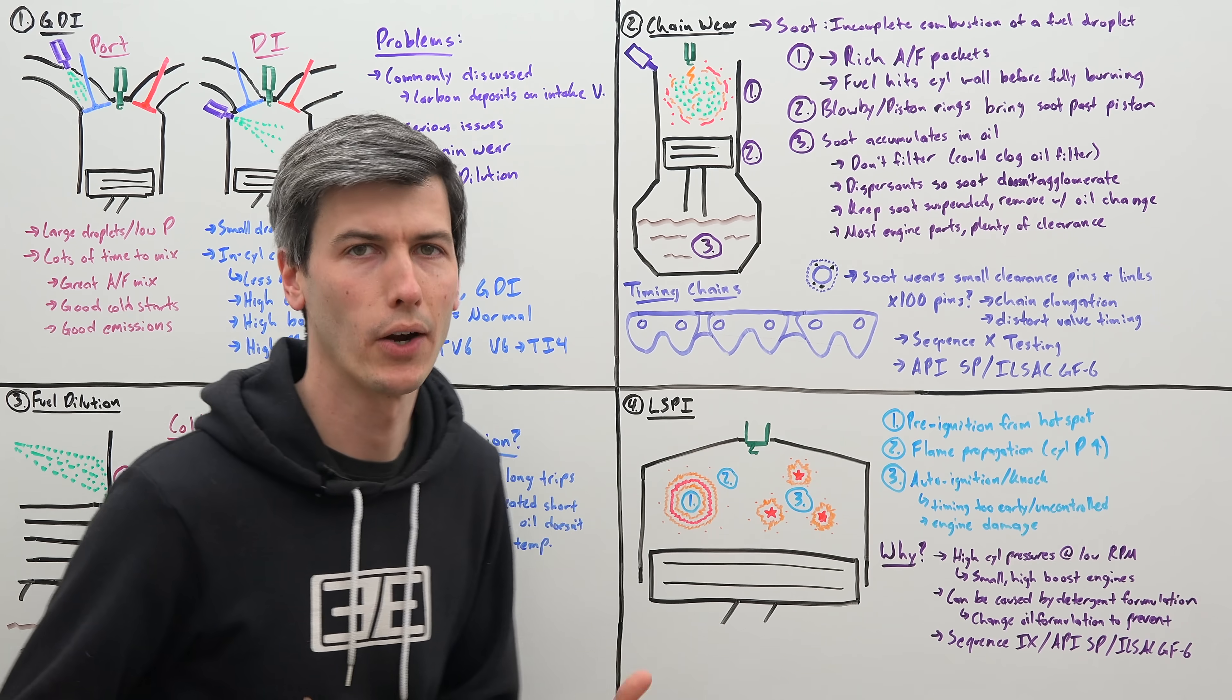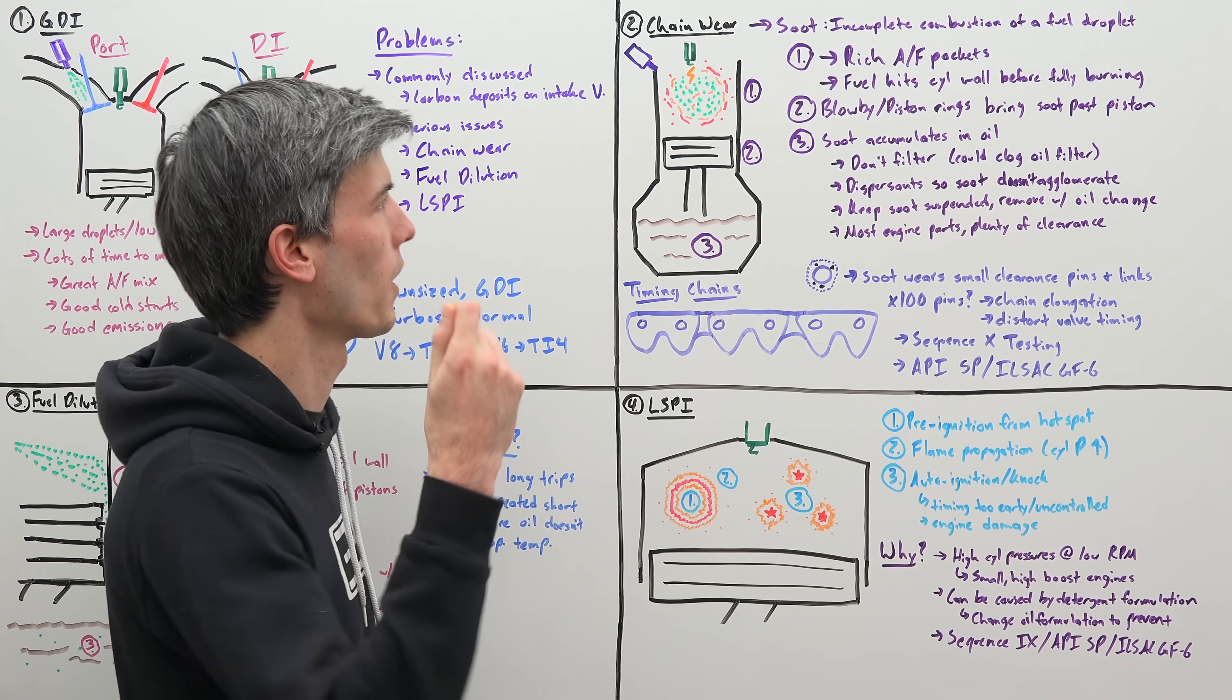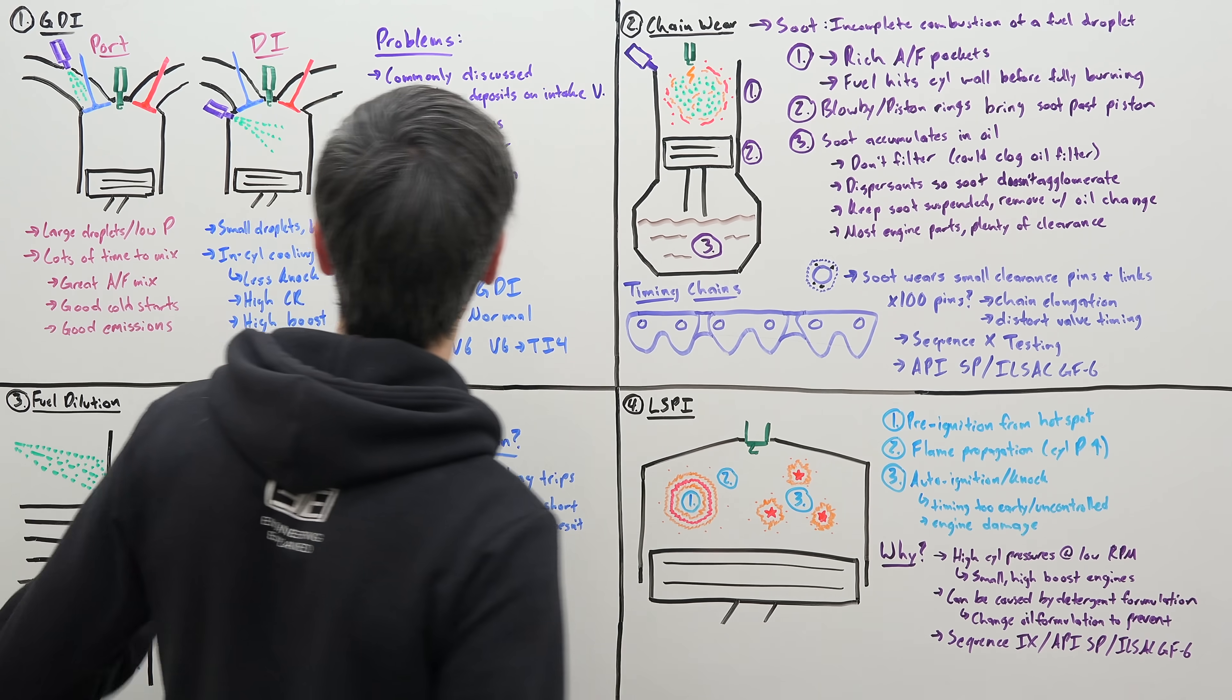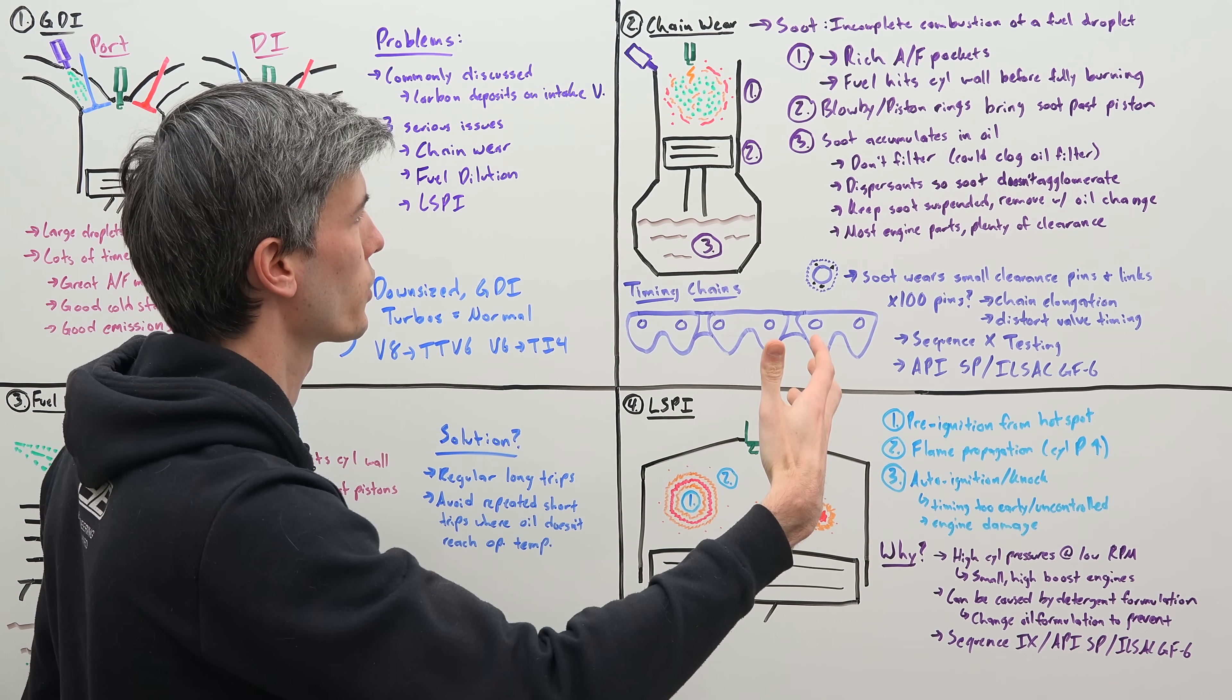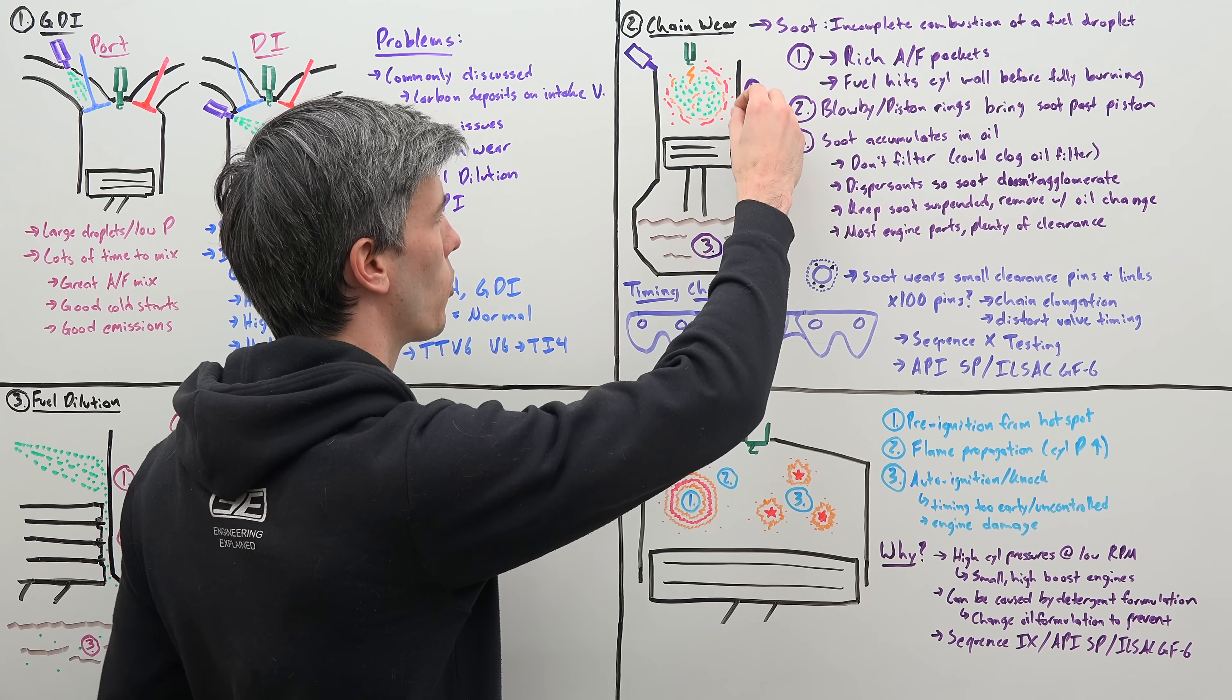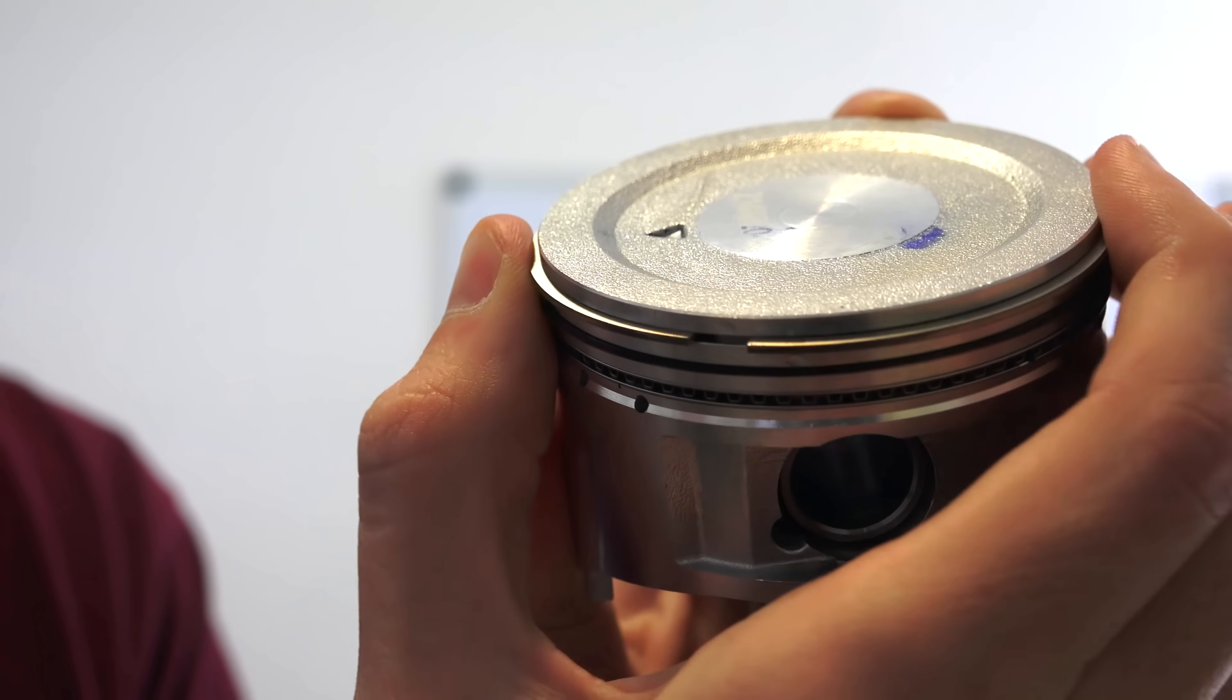So let's start off with timing chain wear. Chain wear is ultimately the result of soot formation within the engine. Soot are the tiny particles that are the result of incomplete combustion of a fuel droplet. So looking at our engine here, you have that fuel combusting from that direct injection. You have rich air fuel pockets within this direct injection system because you don't have quite as much time for all of that air and fuel to perfectly mix. And so those rich pockets, you can have incomplete combustion occur, which can form this soot, as well as combustion products that then hit cylinder walls. If you have that fuel that's partially burned and then ends up hitting that cylinder wall, it could stop that combustion process and then form soot.